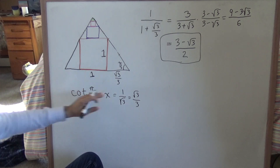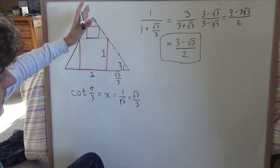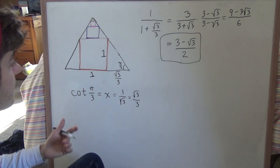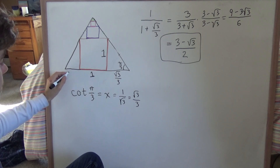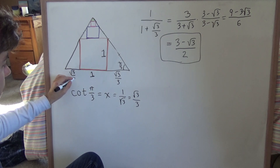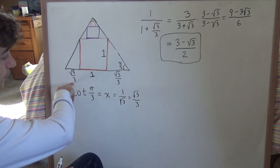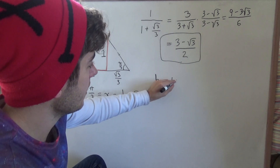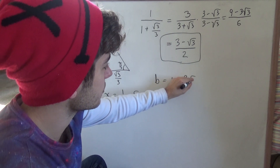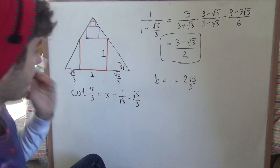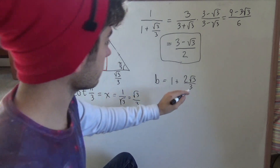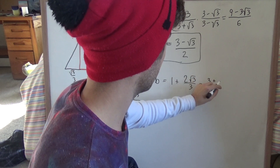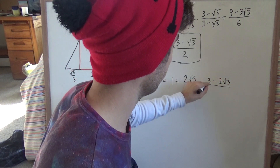First we need to find the base and height of the equilateral triangle, then multiply them together and divide by 2. Notice that this is a symmetric picture, so this will also be √3/3. So the base is going to be √3/3 + 1 + √3/3. The base equals 1 + 2(√3/3), which simplifies to (3 + 2√3)/3.